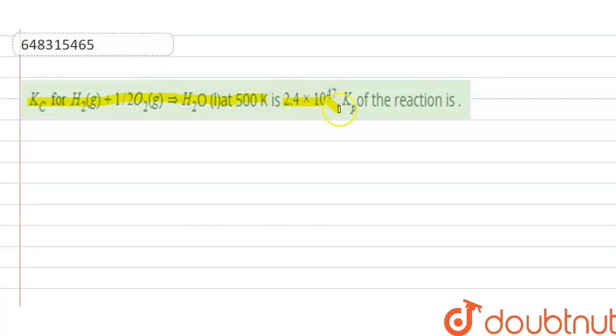We have to find Kp of the reaction. Kp is the equilibrium constant in terms of partial pressures. We can easily find this by using a relation between Kp and Kc.